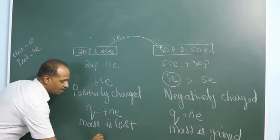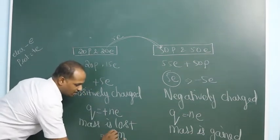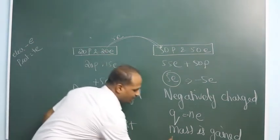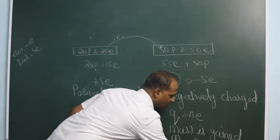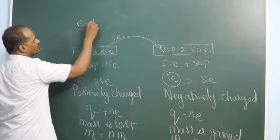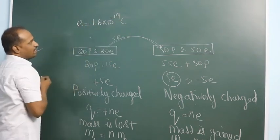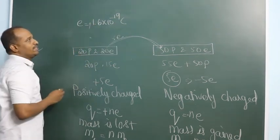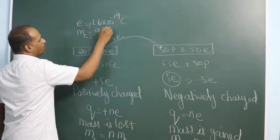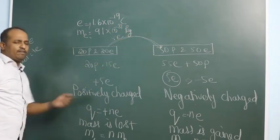The material that is negatively charged gained extra electrons, so it gained mass. The material that lost electrons lost mass. If each electron has mass me, the total mass lost or gained is n × me. The charge of an electron is −1.6 × 10⁻¹⁹ coulomb, the proton's charge is +1.6 × 10⁻¹⁹ coulomb, and the mass of an electron is 9.1 × 10⁻³¹ kg.